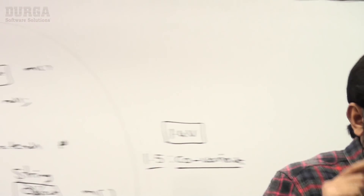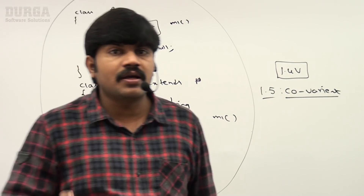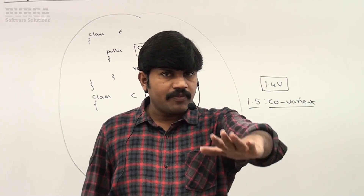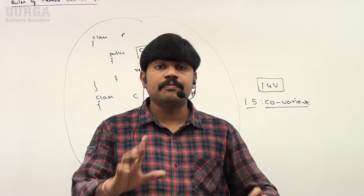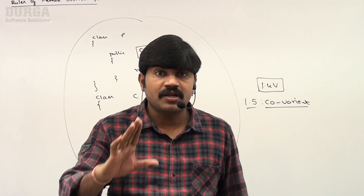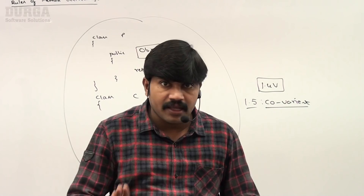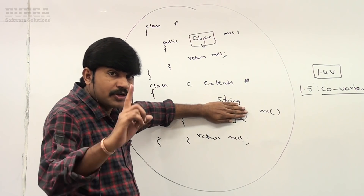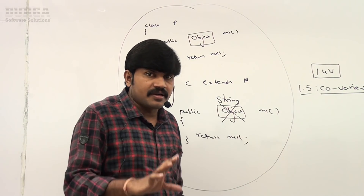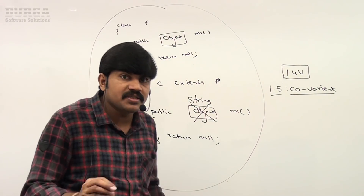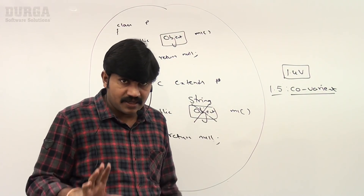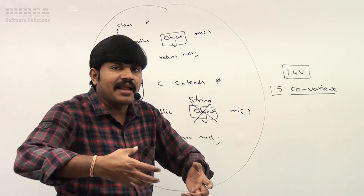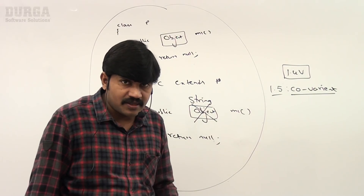This is the rule you should be aware about regarding return types in overriding. Until 1.4 version, return types must be same. From 1.5 version onwards, covariant return types are allowed — child method return type need not be same as parent method return type; child types are also allowed. This concept is called covariant return types.